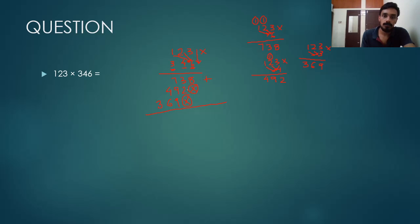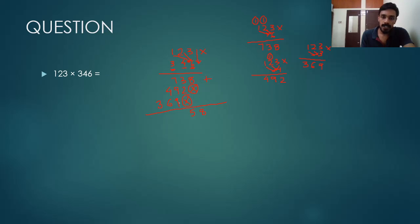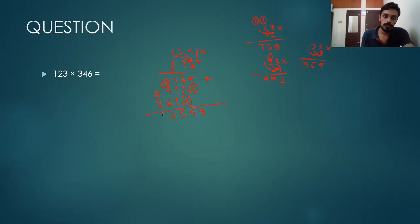Now we add all three numbers. 8 plus 0 plus 0 is 8. 3 plus 2 plus 0 is 5. 7 plus 9 plus 9 is 25 — we write 5 and carry 2. Then 2 plus 4 plus 6 is 12 — we write 2 and carry 1. Then 1 plus 3 is 4. So our answer is 42,558.